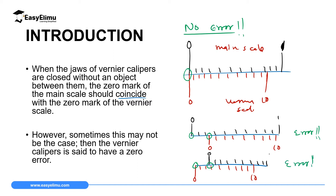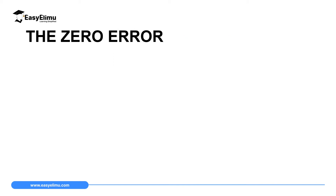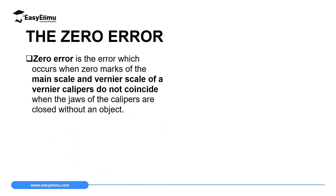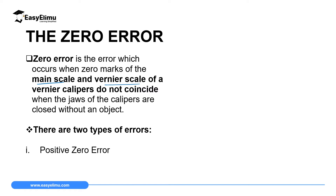As you can see, this error can happen in two ways: when the zero mark of the main scale is on the left side of the zero mark of the Vernier scale, or when the zero mark of the main scale is on the right side. Those two conditions result in what we call a zero error. Zero error occurs when the zero marks of the main scale and the Vernier scale do not coincide when the jaws of the calipers are closed without an object between them. This can result in two types of errors: a positive zero error and a negative zero error.